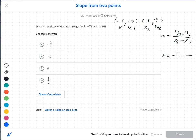So right here we have y2, y2 is nine, subtract a negative seven. So we have nine, subtract a negative seven. On the bottom we have three, subtract a negative one.